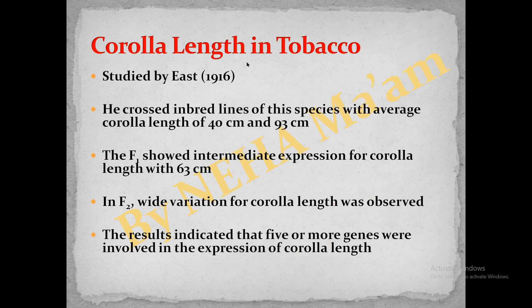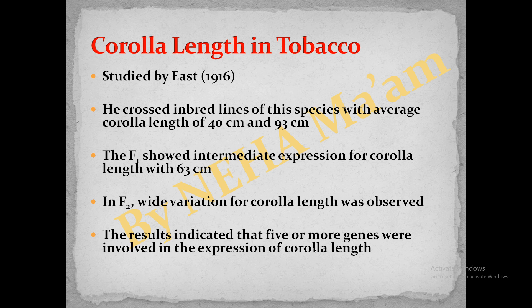The next example is corolla length in tobacco, studied by East in 1916. He crossed different tobacco lines with average corolla lengths of 40 centimeters and 93 centimeters. In the F1 progeny, the corolla length was almost intermediate between the parents at 63 centimeters. After selfing, in the F2 generation he found wide variation in corolla length, and these results indicated that five or more genes are involved in the expression of corolla length. All these examples belong to quantitative inheritance.